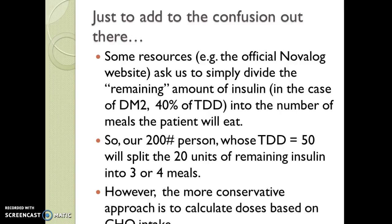Some resources, like the official Novolog site — one of the brands of short-acting insulin — tell us to just take the remaining 40% of total daily dose for a type 2 diabetic and divide it into the number of meals they're going to eat. So our 200-pound person, with a total daily dose of 50, would split the 20 remaining units into 3 or 4 meals. However, that can lead to problems if the person doesn't eat a meal with carbs, has uneven amounts of carbohydrates, or skips meals. The more careful approach is to calculate doses based on carb intake, or use carb choices if the person is in the median weight range.